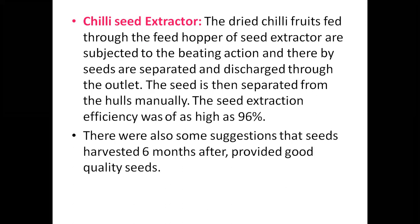Seed extractors are also used: dried chilies are fed into the machine and seeds are discharged at the outlet, recovering about 96 percent of the seed. The machine breaks — not grinds — the fruit; seeds are then separated from husk by winnowing. In some areas, ripe fruits are manually broken and seeds extracted by hand. For capsicum, because it has more pulp and bigger fruit, seeds can be easily removed by hand after drying or wet methods similar to tomato and brinjal can be followed.